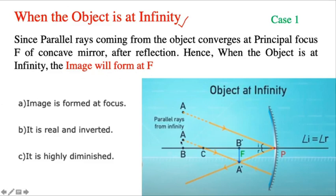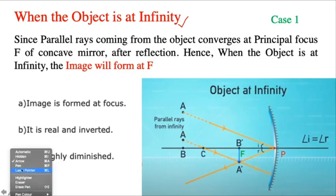If we have any other ray, it hits the pole directly and comes back. According to the second law of reflection, I is equal to R. You can see the point where the ray meets — this confirms the image formation.